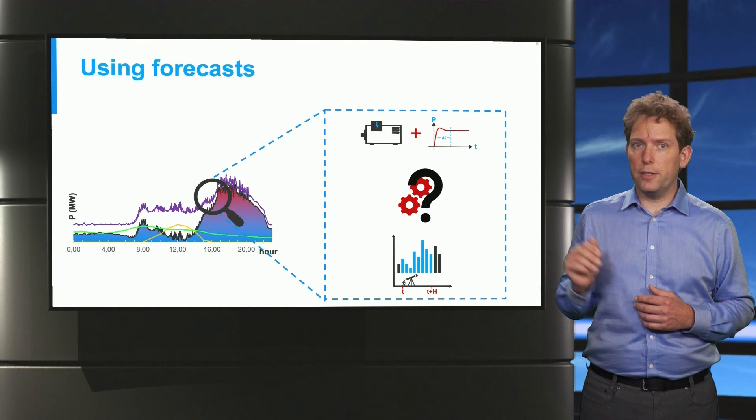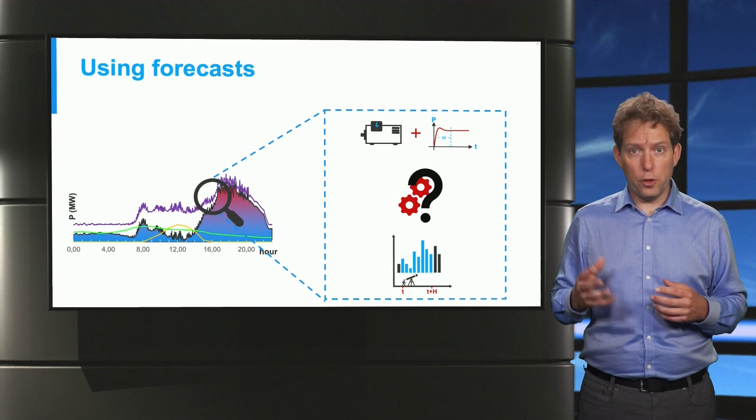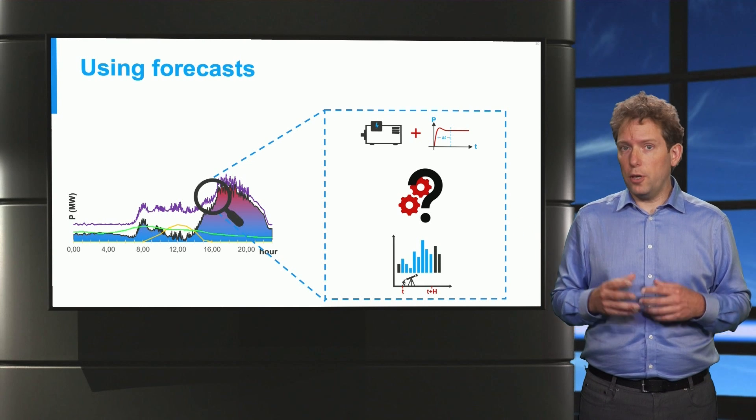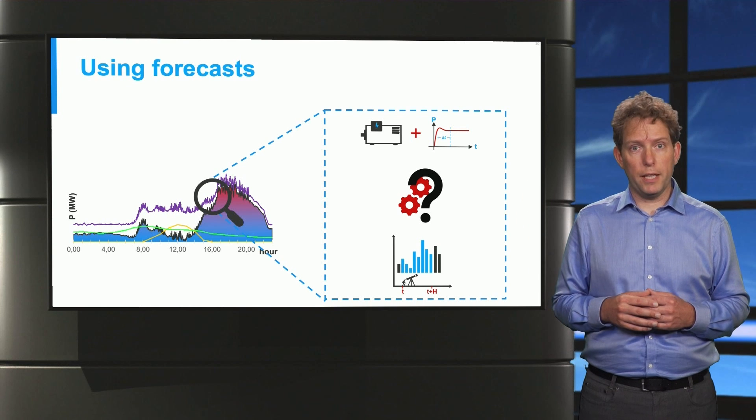So in this example, based on our forecasts, we might choose to start ramping up our fossil generators early in the afternoon, because otherwise they may not be able to reach their desired output in time for the evening peak.